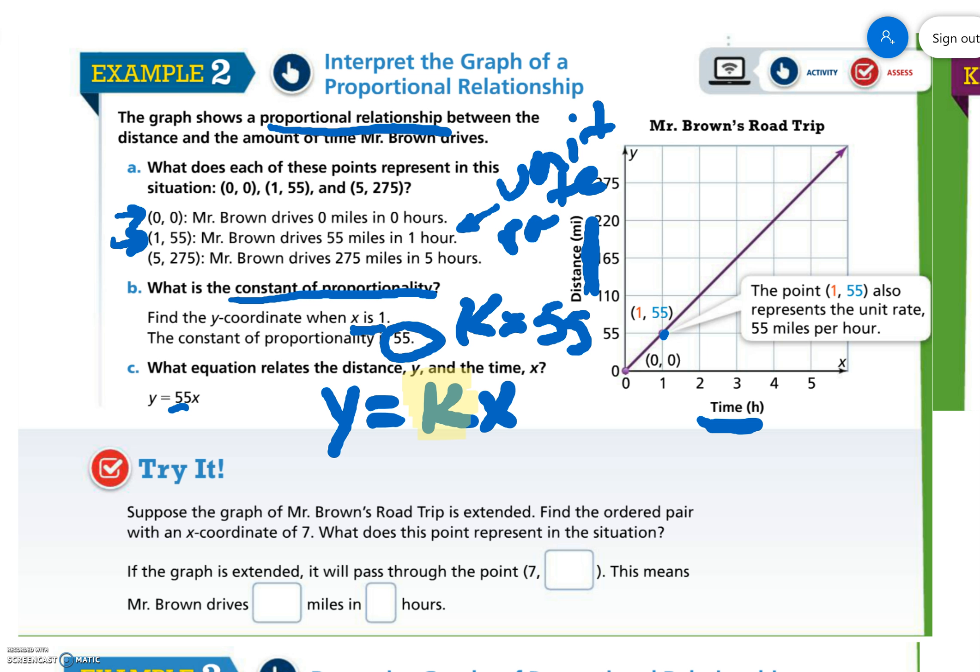Suppose the graph of Mr. Brown's road trip is extended. Find the ordered pair with the x-coordinate of seven. What does this point represent in the situation?